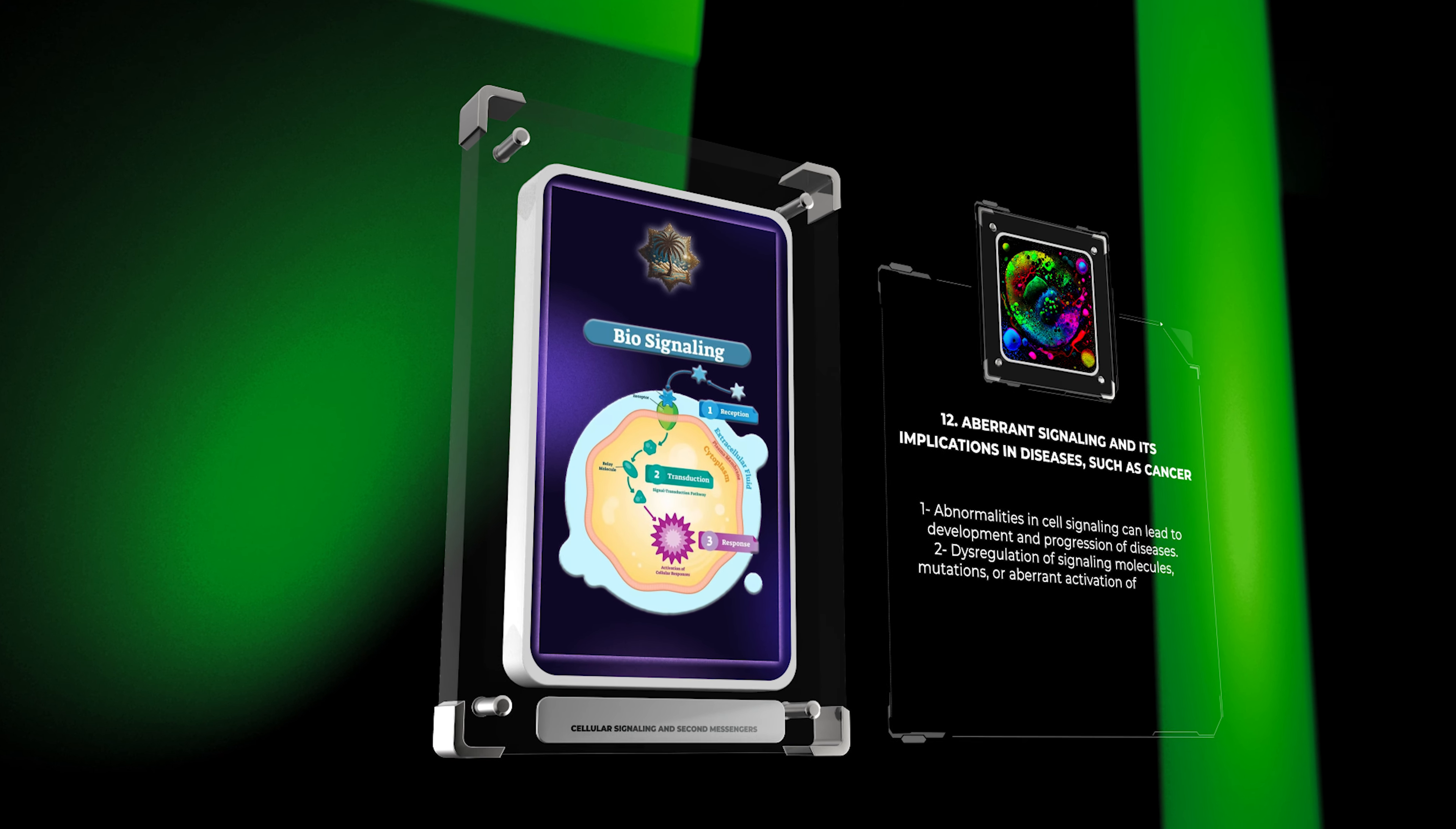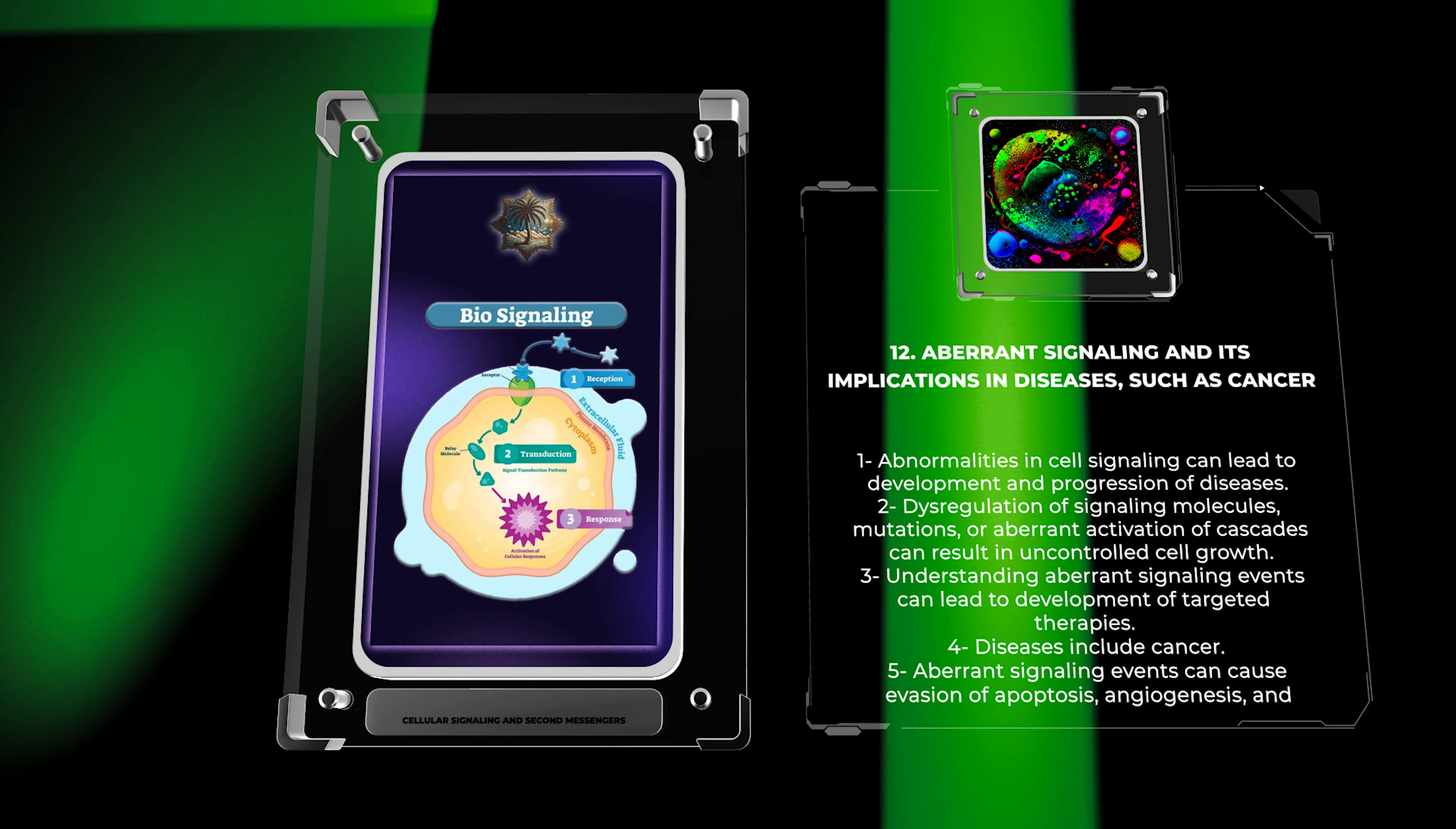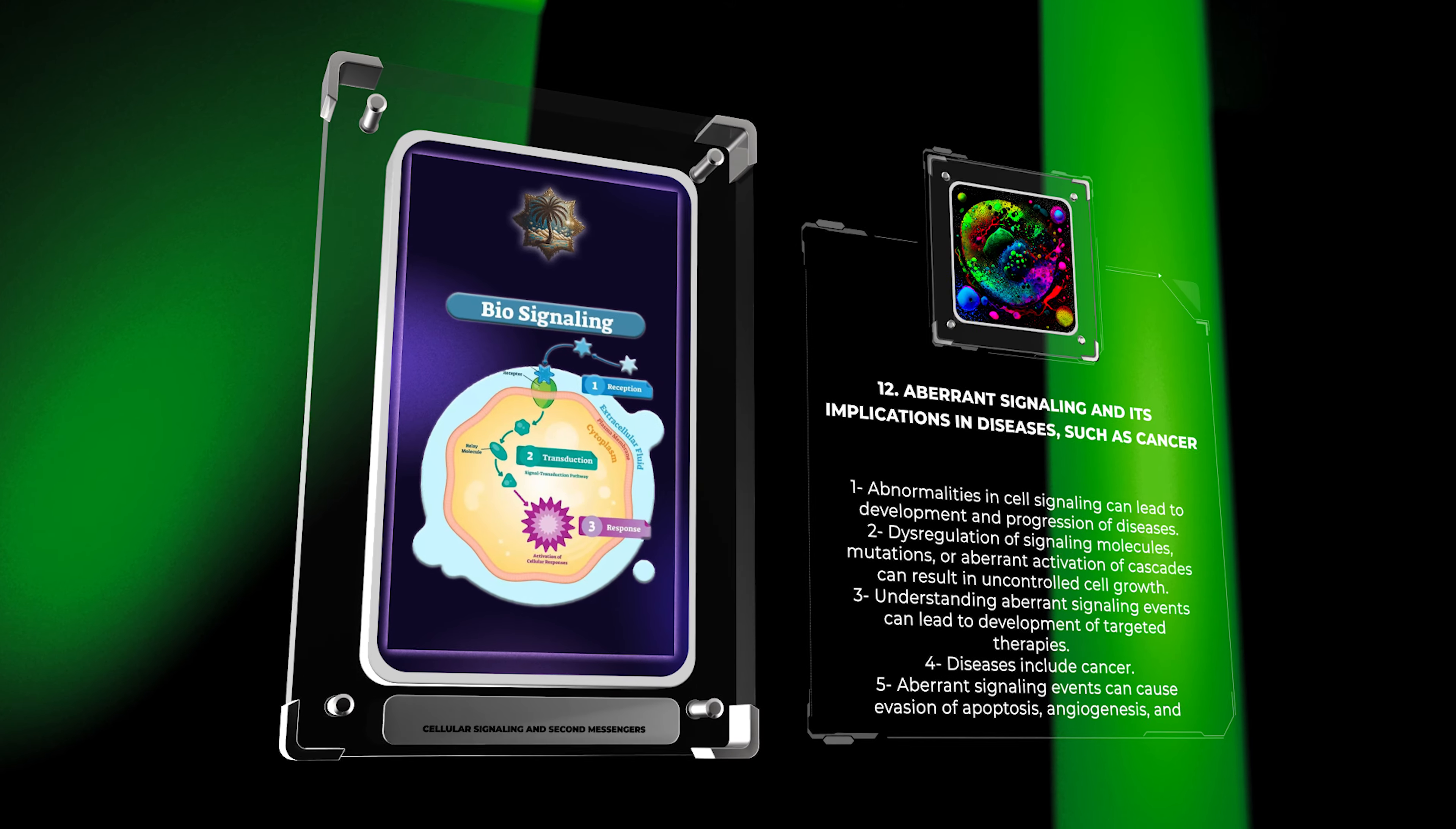Abnormalities in cell signaling pathways can lead to the development and progression of diseases, including cancer. Dysregulation of signaling molecules, mutations in receptors or downstream effectors, or aberrant activation of signaling cascades can result in uncontrolled cell growth, evasion of apoptosis, angiogenesis, and metastasis.